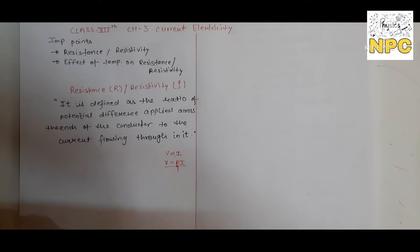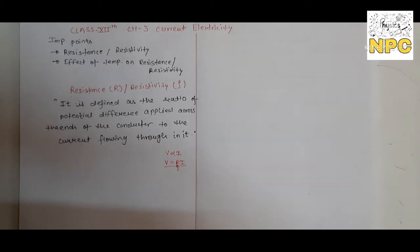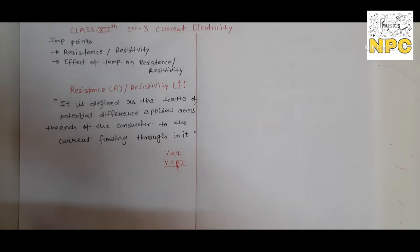But R is not always constant — R can change with temperature. Now we will see how. If we talk about the definition of resistance, it is defined as the ratio of the potential difference applied across the ends of the conductor to the current flowing through it.